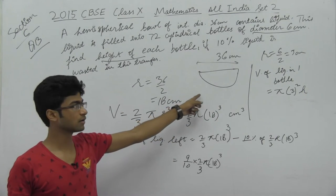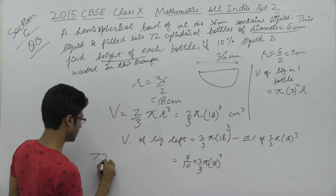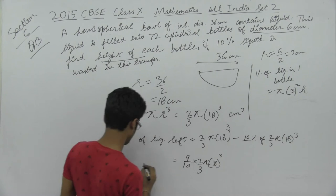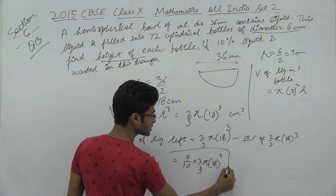We have 72 bottles, so 72 times this volume. 72 × π × 9h should equal the remaining liquid volume.